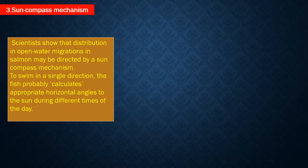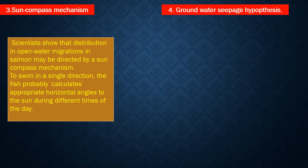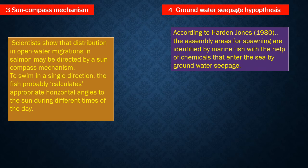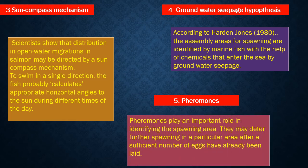Third, sun compass mechanism: scientists found that orientation in open water migrations in salmon may be directed by a sun compass mechanism. To swim in a single direction, the fish probably calculates appropriate horizontal angles to the sun during different times of the day. Fourth, groundwater seepage hypothesis: according to Harden-Jones in 1980, assembly areas for spawning are identified by marine fish with the help of chemicals that enter the sea by groundwater seepage. Fifth, pheromones play a very important role in migration — they help in identifying the spawning area and may deter further spawning in a particular area after a sufficient number of eggs have already been laid.